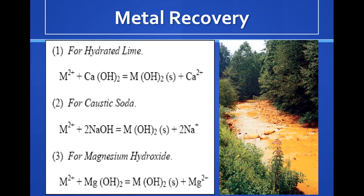Recovery can be achieved by hydrated lime, caustic soda, or magnesium hydroxide. In each reaction, metals are collected as metal hydroxide compounds — the same type of compound that covers the streams impaired by acid mine drainage — iron hydroxide.